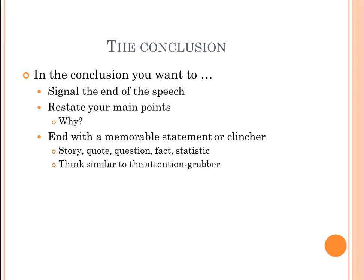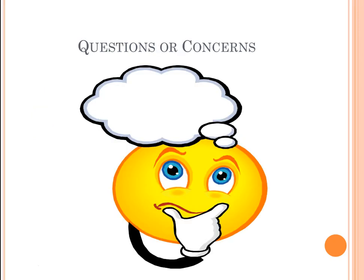For the conclusion, keep it simple. Signal the end with a signpost like 'in conclusion' or 'to conclude.' Restate your main points to help listeners retain the information — restating solidifies it in their minds. Then end with a memorable statement, also called a clincher — a story, quote, question, fact, or statistic — essentially the same tools as your attention grabber, just used at the end. That about wraps up our lecture for this week. If you have any questions, feel free to reach out. You guys are doing amazing — keep up the hard work, and I hope this lecture helped you better understand how to outline and organize your speech.